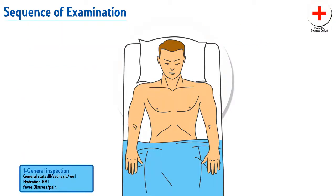We begin our examination with general inspection. Observe the general state of the patient. Is he looking ill, cachectic, or well? Assess his hydration status, BMI, and whether the patient is in distress or in pain.